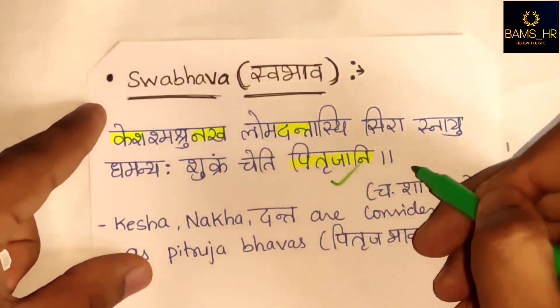Now, Danta - that is teeth. Teeth are considered under a variety of Asthi. There are five varieties of Asthi, one of which can be correlated with Danta.